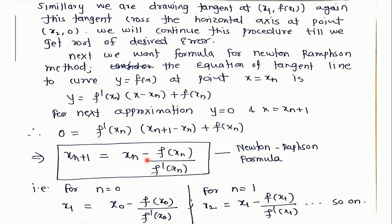If we take n equals 0 then we get x1 equals x0 minus f(x0) upon f'(x0). f'(x0) denotes the derivative of the function at point x0. If we put n equals 1 then we get x2 equals x1 minus f(x1) upon f'(x1) and so on.